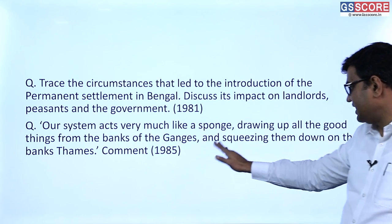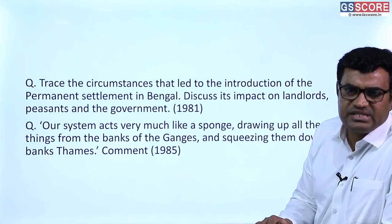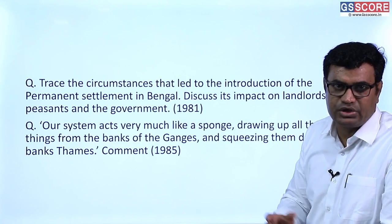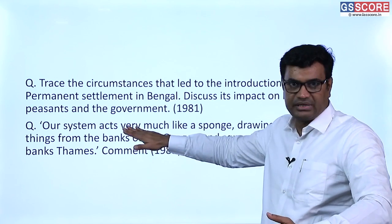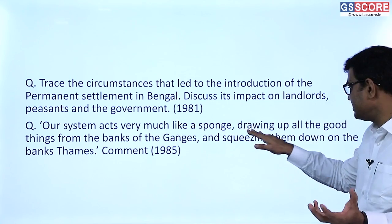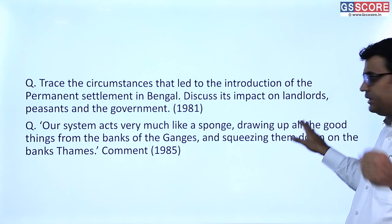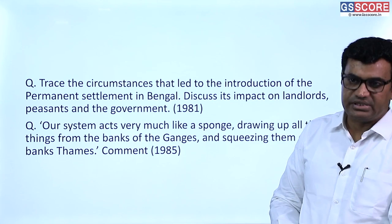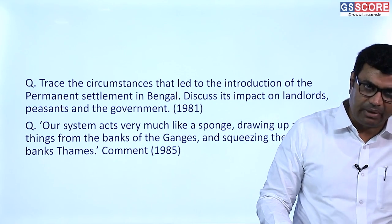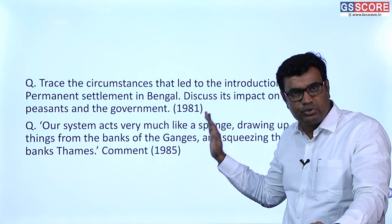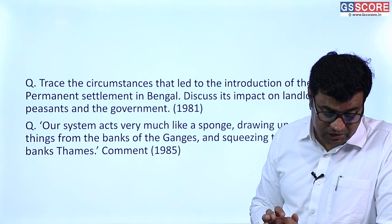Another question references a remark by British officer John Sullivan: 'Our system acts very much like a sponge, drawing up all the good things from the banks of the Ganges and squeezing them down on the banks of the Thames.' This explains the concept of drain of wealth — all resources were taken unilaterally from India and deposited in Britain, indicating a unilateral flow of wealth known as the drain of wealth. This was the economic impact of British colonial rule.